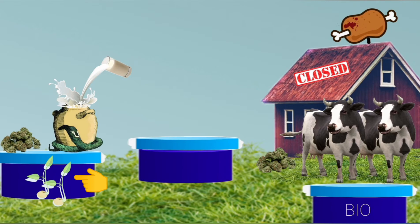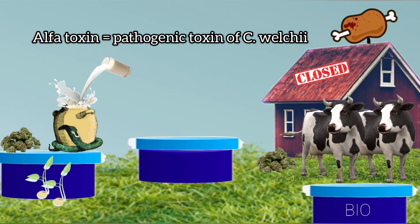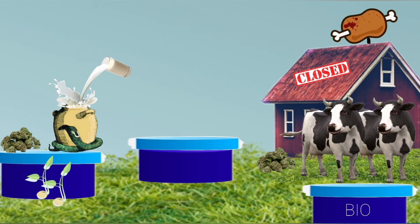Also I'm referring to alfalfa sprouts specifically because alpha toxin is the most important toxin produced by antigenic types of Clostridium welchii. In addition to all this, these cows are also helping in production of milk.